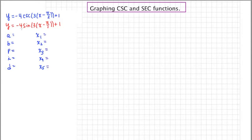A is for amplitude. It's the absolute value of the coefficient which precedes the trig function. In this case, it's 4. B is the coefficient that precedes the x. In this case, it's 3.